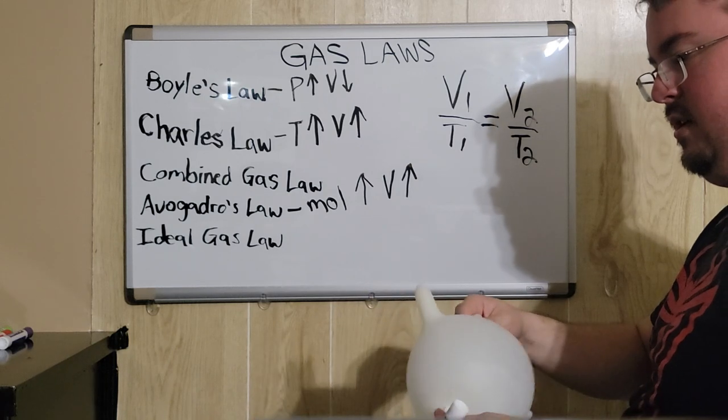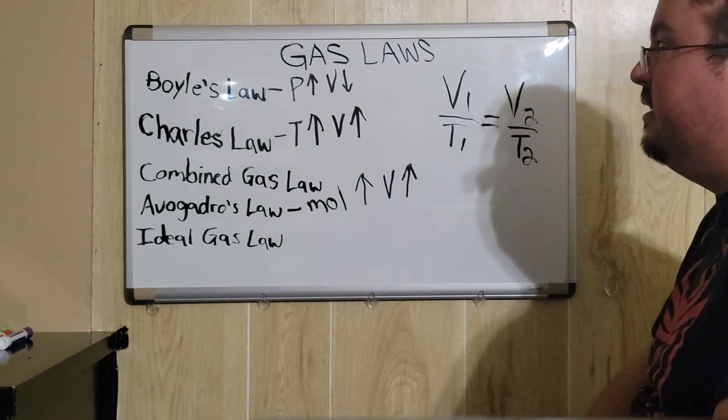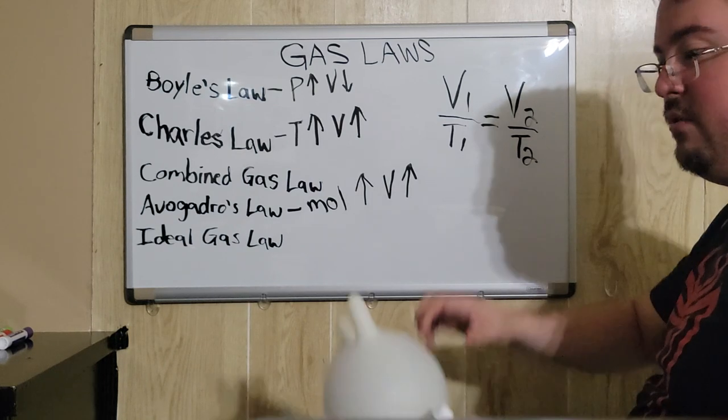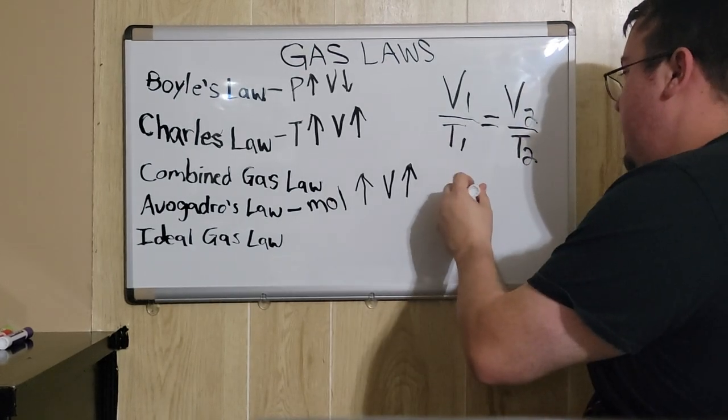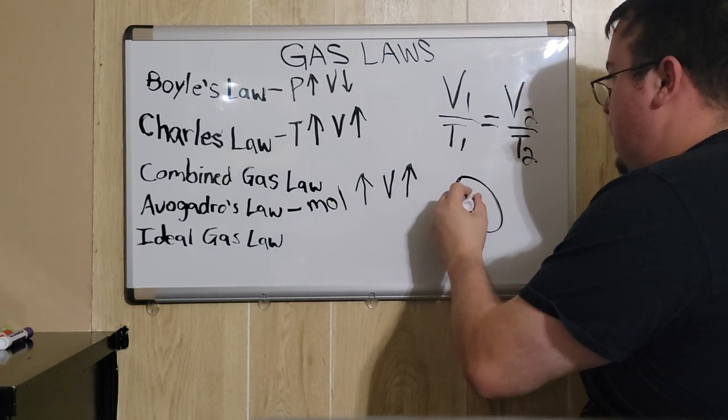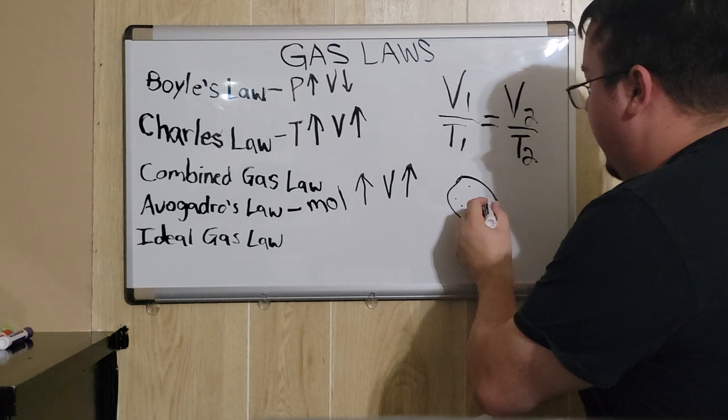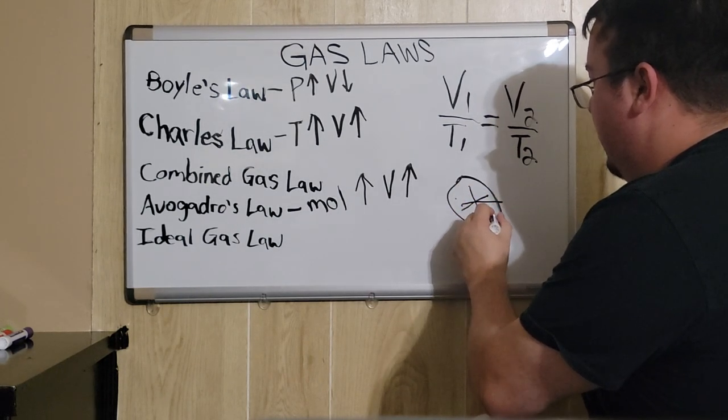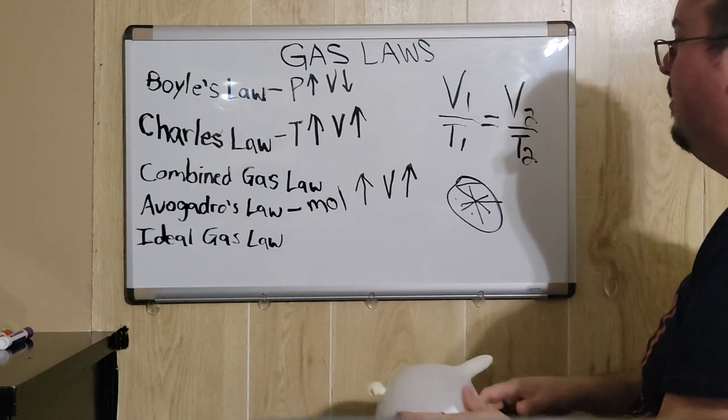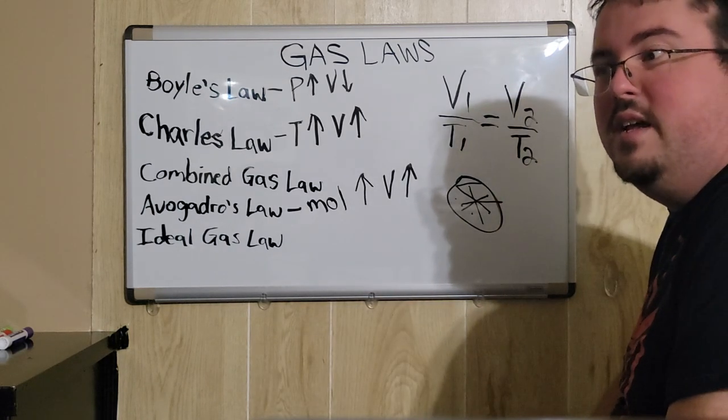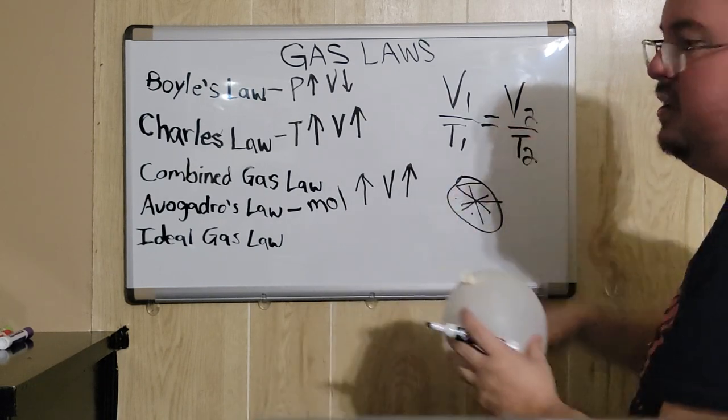If I took this balloon and I placed it into the freezer, you would see that the volume actually decreases, the volume will shrink down. What's happening is that the particles inside of the balloon, when the balloon is cooled down, they're not moving as fast and as erratically. That's what actually causes the balloon to shrink down. And if they heat up, then the opposite happens. They're actually moving faster and more erratically. That causes the expansion of the balloon.